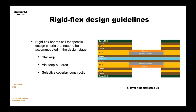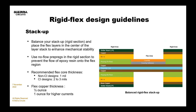Rigid flex design guides also include stack-up considerations. Really understand your via keep-out areas and where your cover lay is going to go. The cover lay doesn't go all the way through the complete construction, which is really important. You want to always balance the rigid sections — don't have an uneven thickness. In a rigid-flex-rigid design, keep the rigid sections to the same thicknesses at minimum.